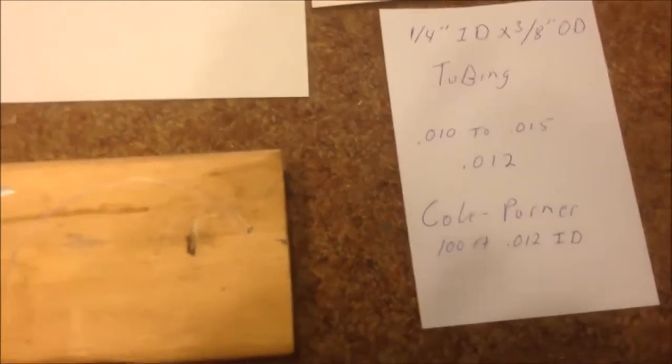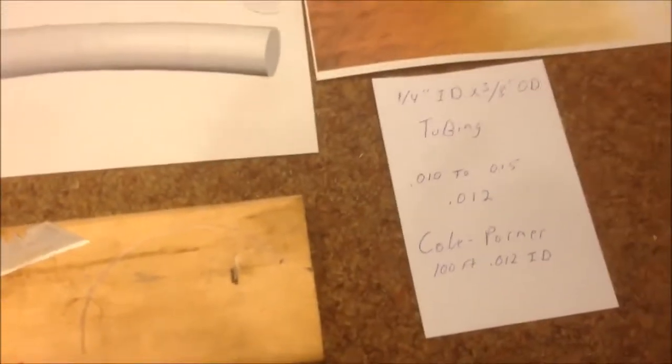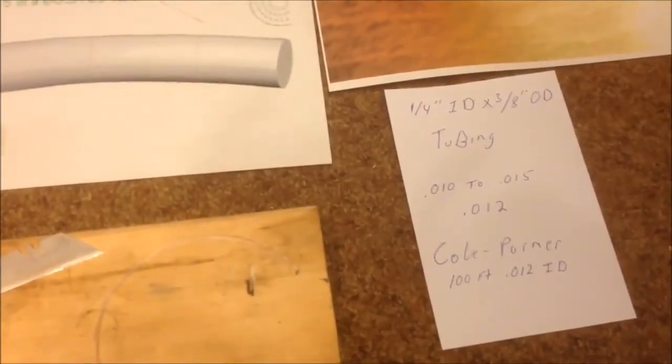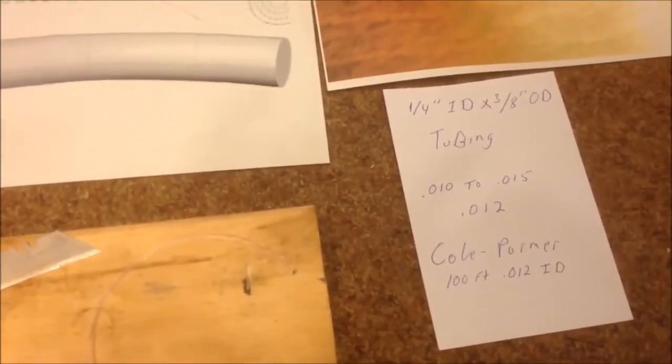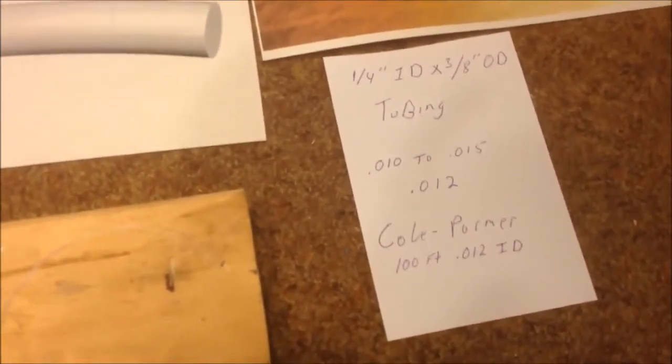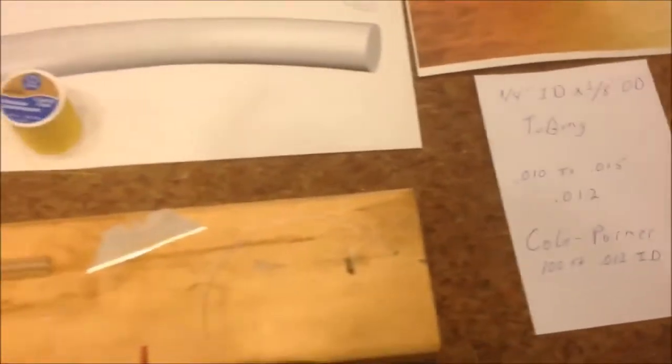Now, the ID for a Stan Myers tube is anywhere from 0.010 to 0.015. I just happened to get the in-between, 0.012. It works good.